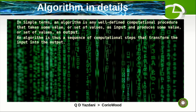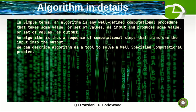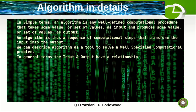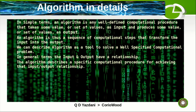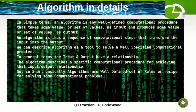We give a problem as input and the algorithm gives us output. We can describe an algorithm as a tool to solve a well-defined computational problem. The input and output have a relationship, and the algorithm describes a specific computational procedure for achieving that input-output relationship. In short, algorithms are a well-defined set of rules or recipe for solving computational problems.